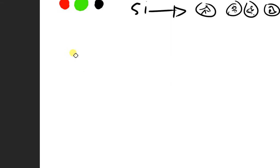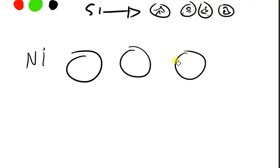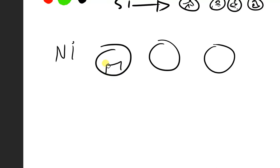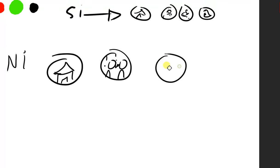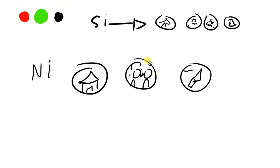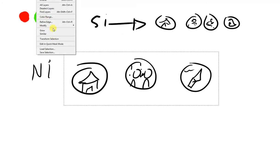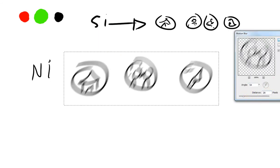So what introverted intuition does is it takes all these memories and blurs them out. It looks at the memories from a distance. So if introverted sensing has a person looking at their own memories from very, very close up — they can see all the details — introverted intuition users are standing at a major distance, so the memories become blurry.